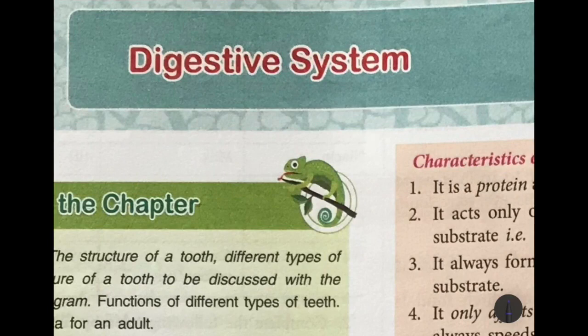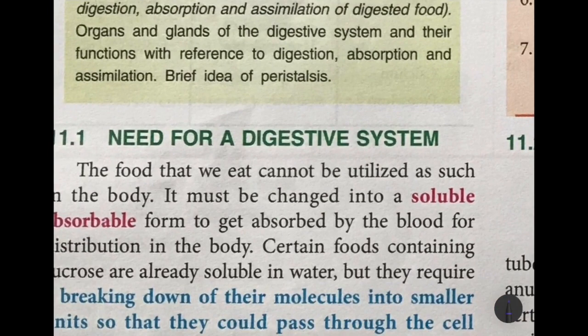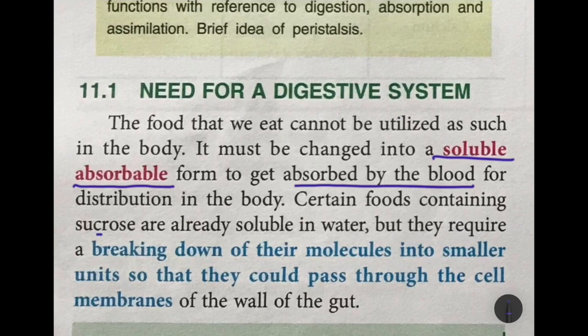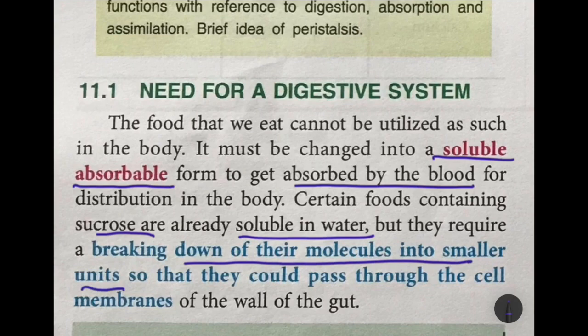Hello girls, I hope you're staying safe at home. Today we are going to start with the digestive system. Why do we need a digestive system? The food we eat cannot be used in the body in that form, so it must be changed into a soluble, absorbable form so it can get absorbed by the blood and distributed to different parts of the body. Certain foods contain sucrose which is already soluble in water, but they still have to be broken down into smaller particles so they can easily pass through the cell membranes of the wall of the gut.